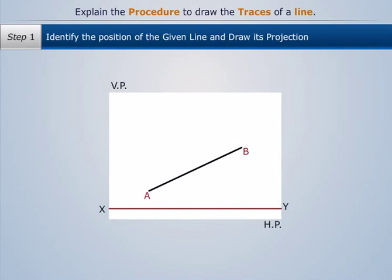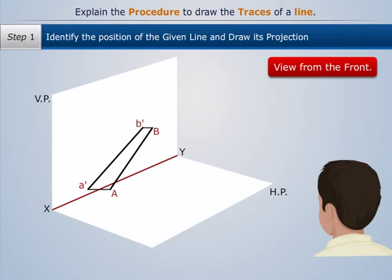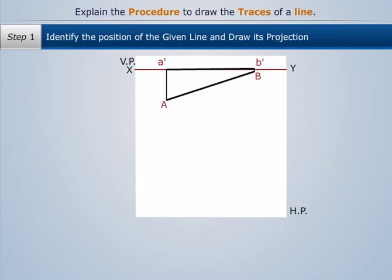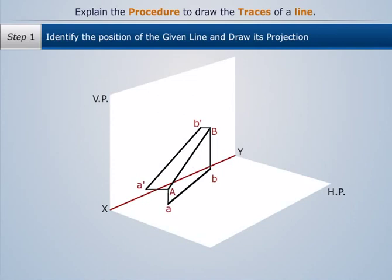When we view this line AB from the front, we get its projection on the VP as A-B-. When we view the line AB from the top, we get its projection on the HP as AB.